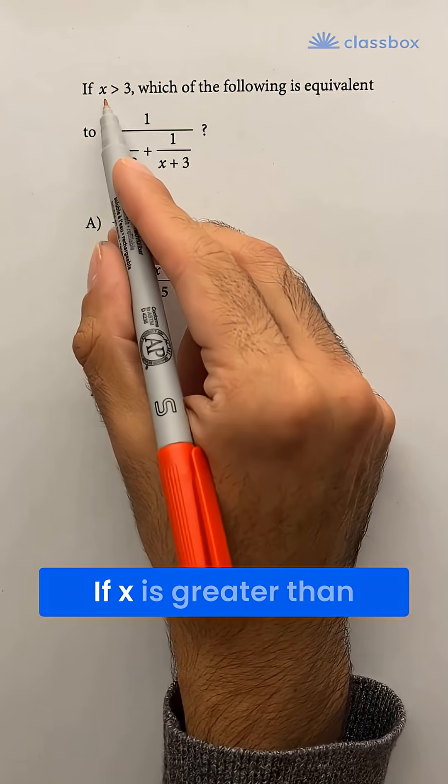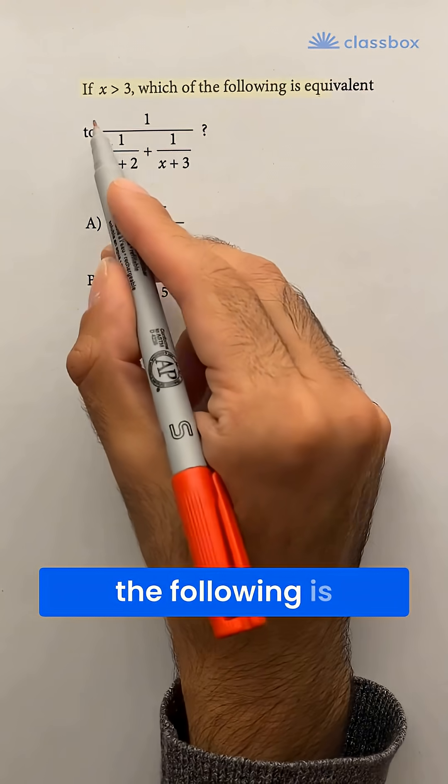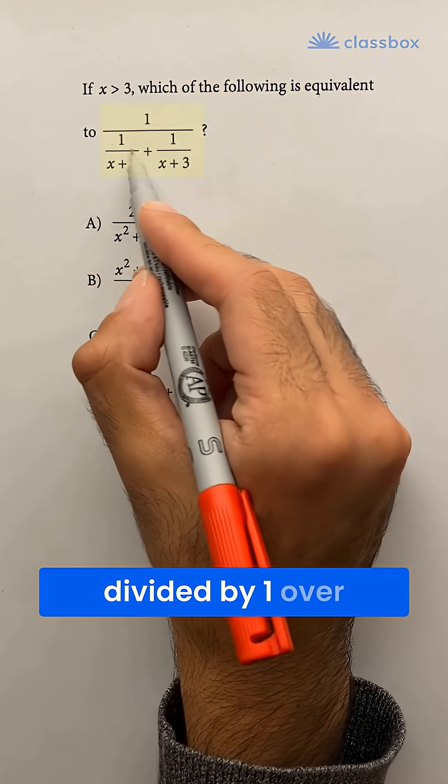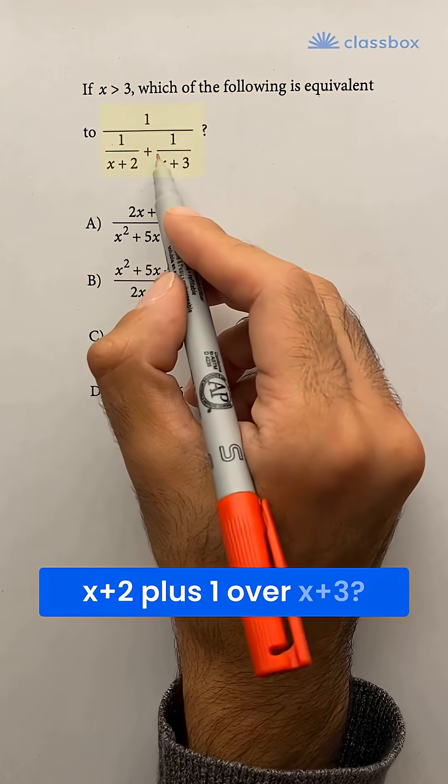Consider this question. If x is greater than 3, which of the following is equivalent to 1 divided by 1 over x plus 2 plus 1 over x plus 3?